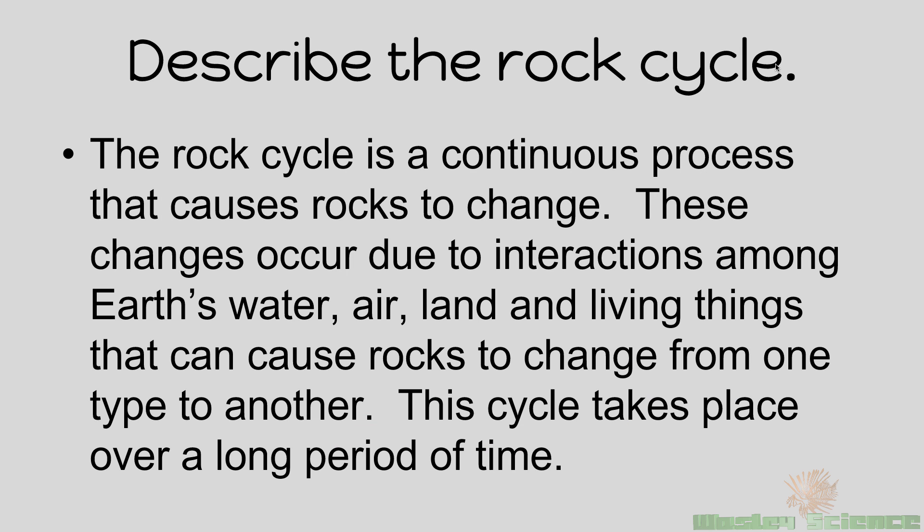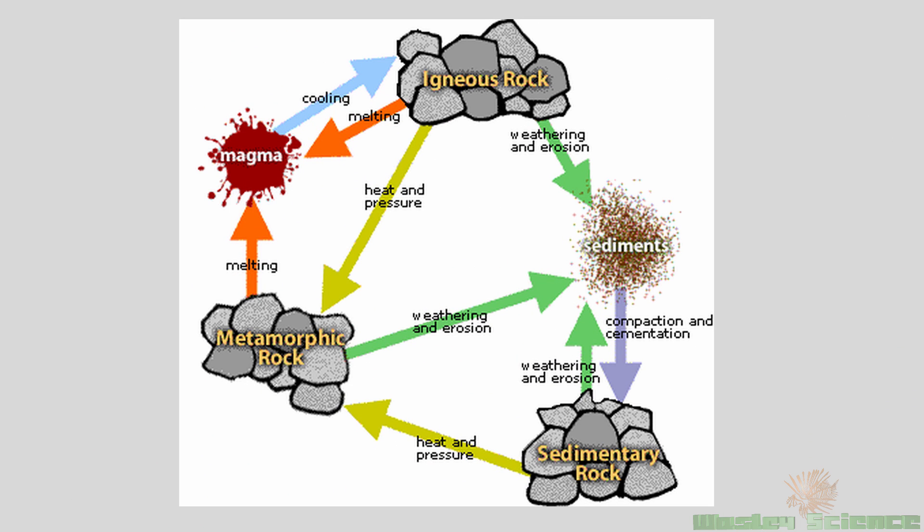The rock cycle is a continuous process that causes rocks to change. When you see a rock on the ground, realize that rock hasn't always been that rock, and it will not always be that rock — it will go through changes forever. These changes occur due to interactions among the Earth's water, air, land, and living things. This cycle takes place over a very, very long period of time. Here's a very simplified version of the rock cycle — I highly recommend you draw it in your notes right now.